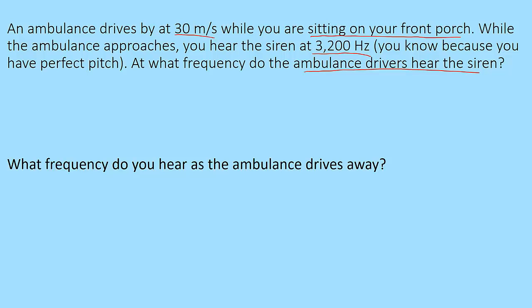Keep in mind that the Doppler effect equation is f prime equals f times 1 plus or minus v observer over v sound over 1 minus or plus v source over v sound. In this case we are actually looking for f, the actual source of the siren. We know the f prime and we know the observer's information. You are sitting on your front porch so v observer over v sound goes to 0, which simplifies this equation to be f times 1 over 1 minus 30 over 343.